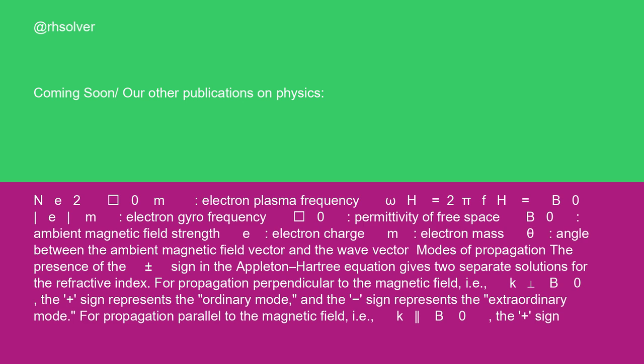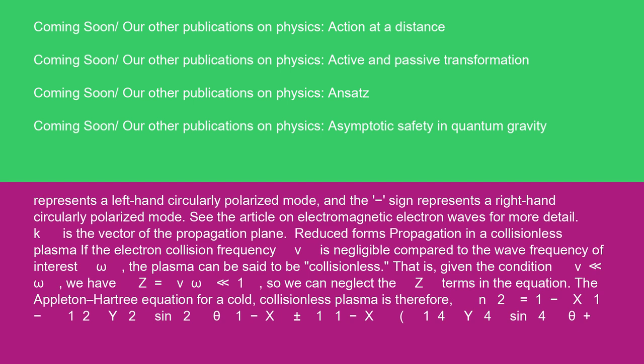Modes of propagation: the presence of the plus or minus sign in the Appleton-Hartree equation gives two separate solutions for the refractive index. For propagation perpendicular to the magnetic field (k ⊥ B₀), the plus sign represents the ordinary mode, and the minus sign represents the extraordinary mode. For propagation parallel to the magnetic field (k ∥ B₀), the plus sign represents a left-hand circularly polarized mode, and the minus sign represents a right-hand circularly polarized mode. See the article on electromagnetic electron waves for more detail. k is the vector of the propagation plane.